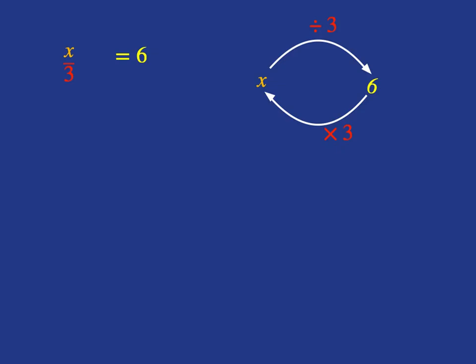What we do to one side of the equation, we must do to the other, so let's multiply both sides of the equation by 3. That will mean you'll get back to x on its own on this side, and 6 multiplied by 3 will give you 18, so x is 18 is the solution to the equation.